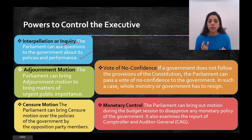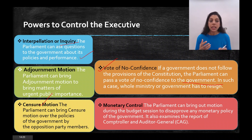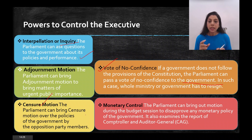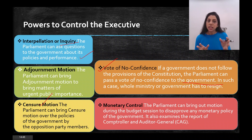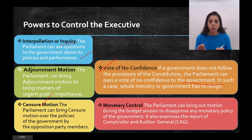Then there is the Censure Motion. The difference between a Censure Motion and a Vote of No Confidence is that both come from the opposition, but in a Vote of No Confidence the opposition checks whether the government still has majority — and if not, the government has to resign. In a Censure Motion, the opposition questions certain specific policies of the government's ministers and criticizes them, without necessarily bringing down the government.